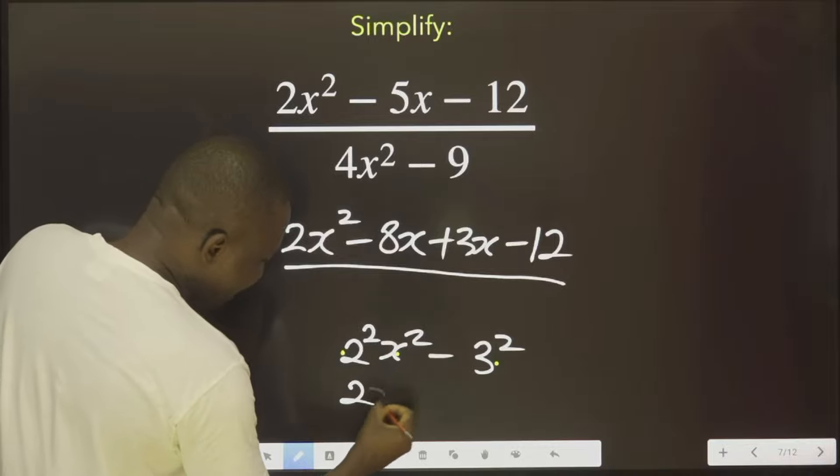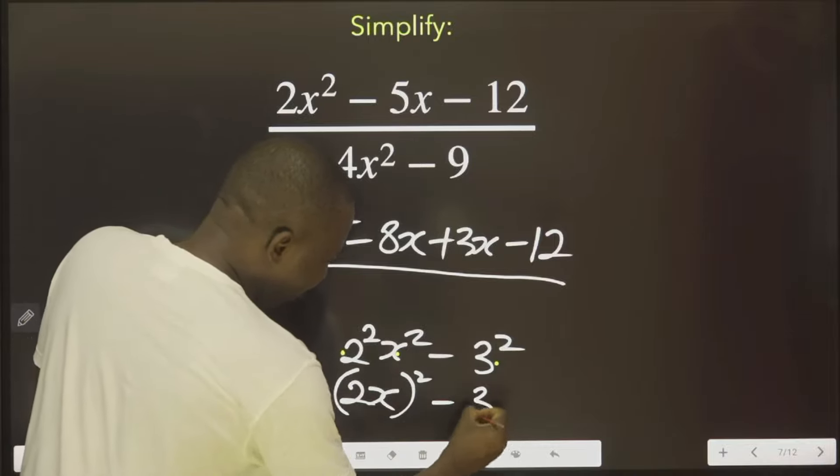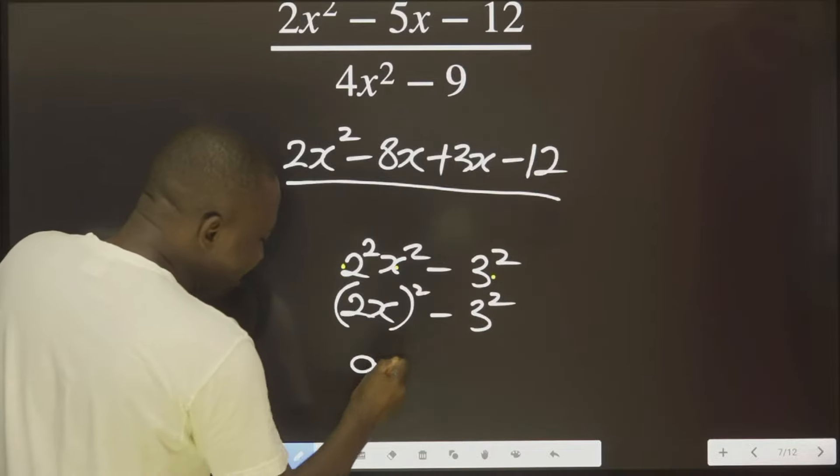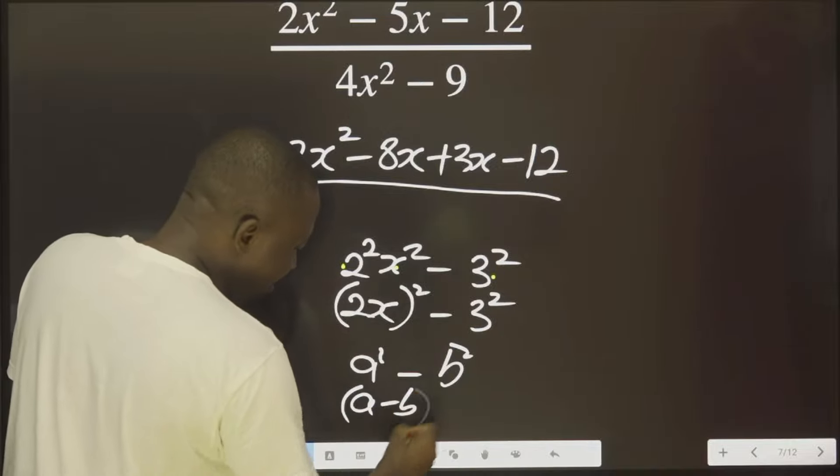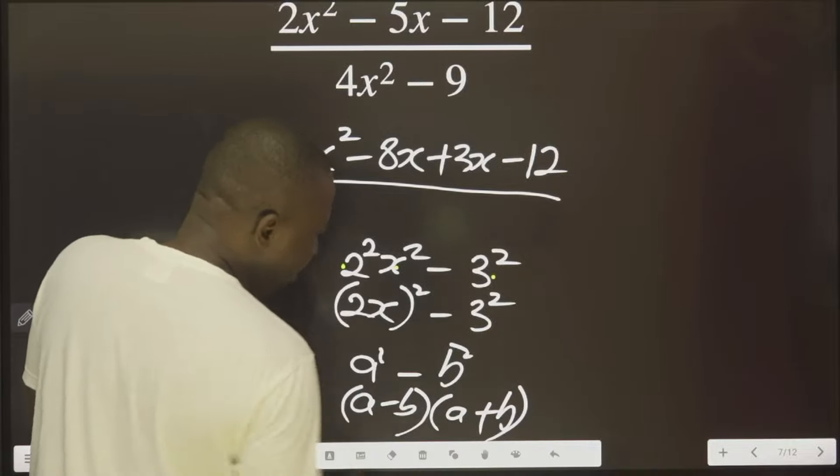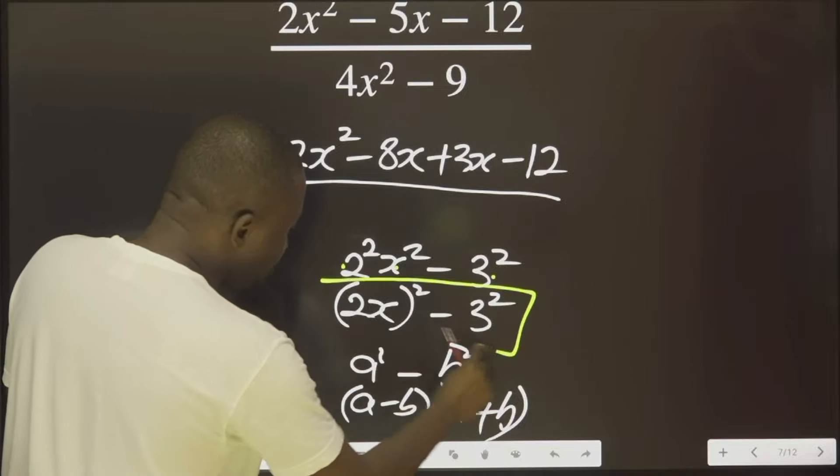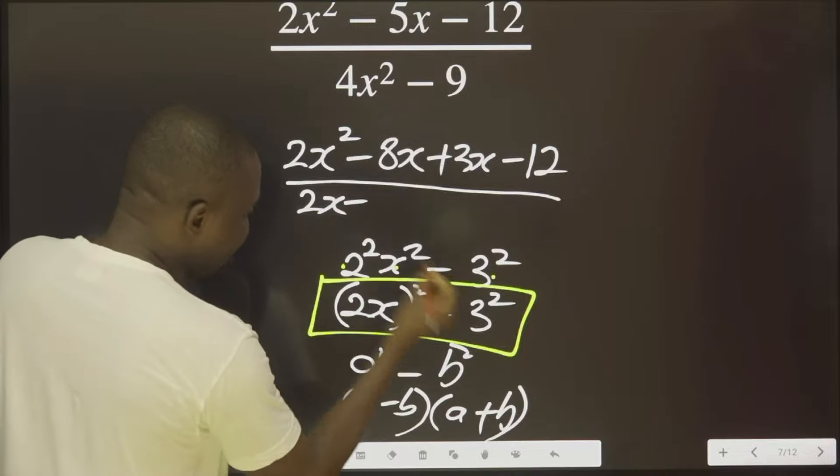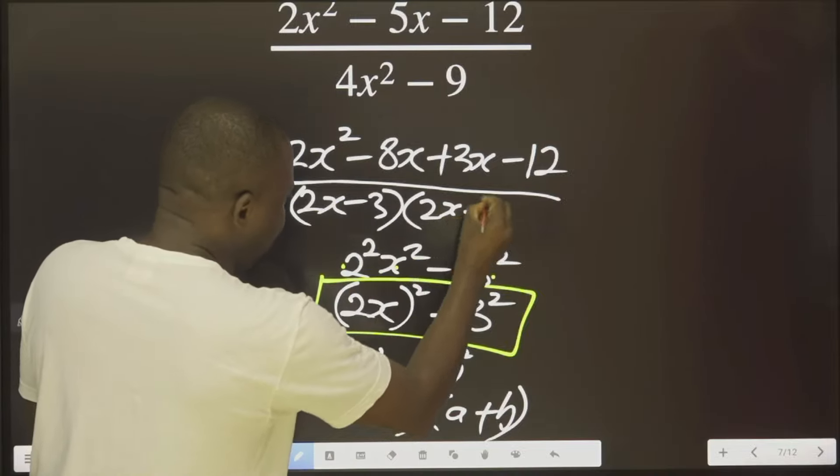We can now write this. This is like a squared minus b squared, which is a minus b, a plus b. So, all we need to do now is to come here and use this by saying this is 2x minus 3 and 2x plus 3.